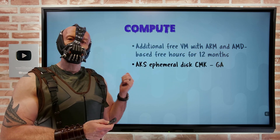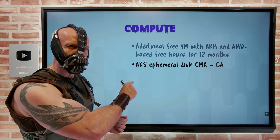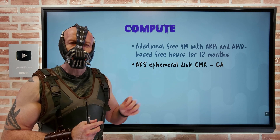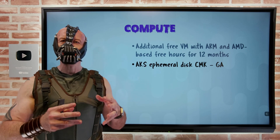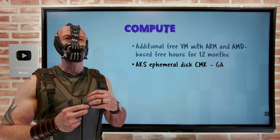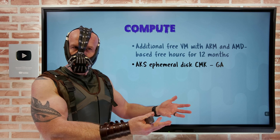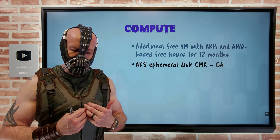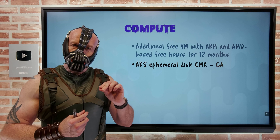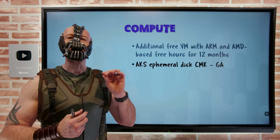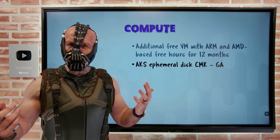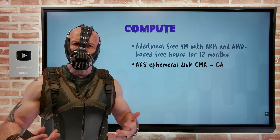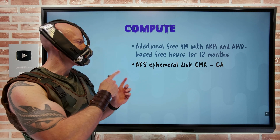If I'm using Azure Kubernetes Service, the ephemeral disk — instead of having a managed disk — uses the temp or caching space on the host, which means I don't have to pay for the managed disk, and it's going to have lower latency. Now, even if I use the ephemeral disk, instead of being a platform-managed key for the encryption, I can have a customer-managed key in my Azure Key Vault. That is now GA.